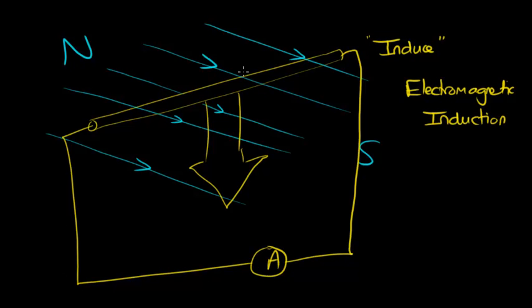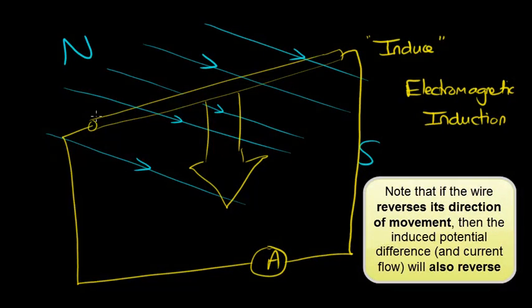But as soon as you start the cutting process again, that's when you start to induce the potential difference, the voltage, and then the current starts to flow if it's a complete circuit.